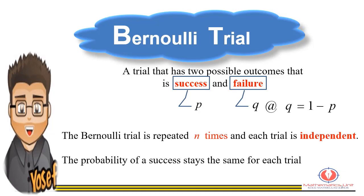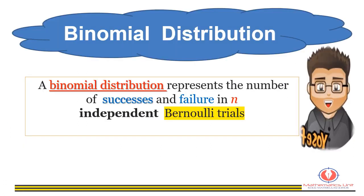The Bernoulli trial is repeated n times and each trial is independent, so the probability of success stays the same for each trial. The Bernoulli distribution represents the success or failure of a single Bernoulli trial. The binomial distribution represents the number of successes and failures in n independent Bernoulli trials.